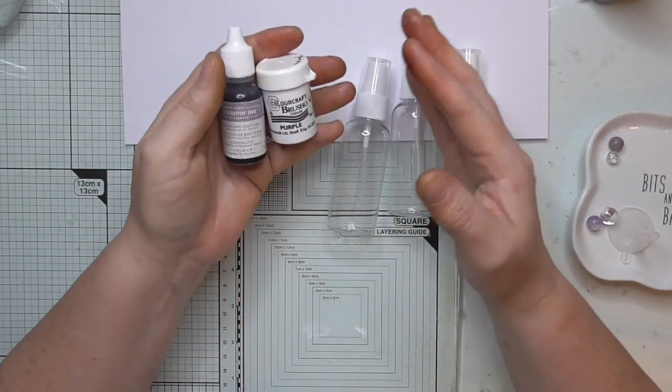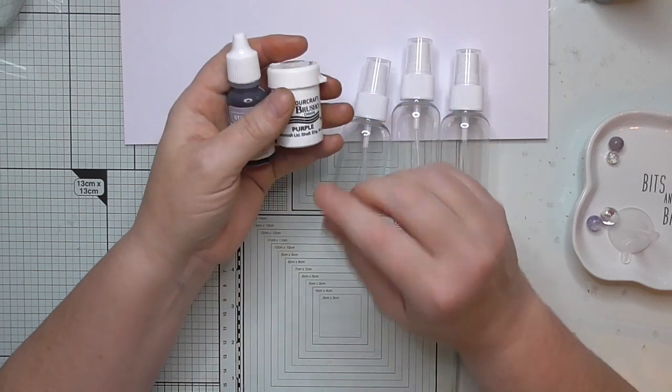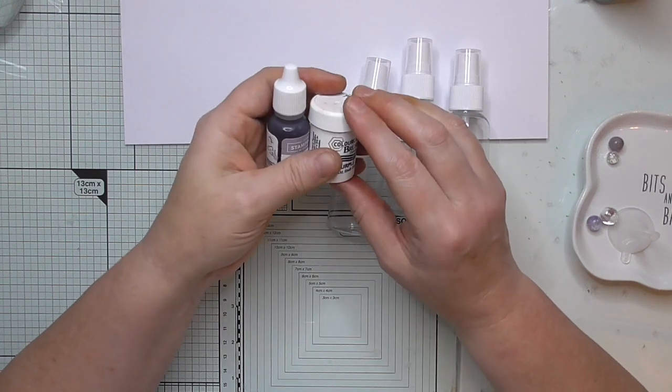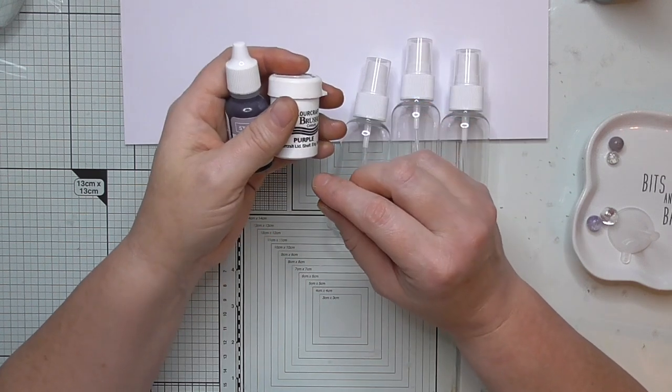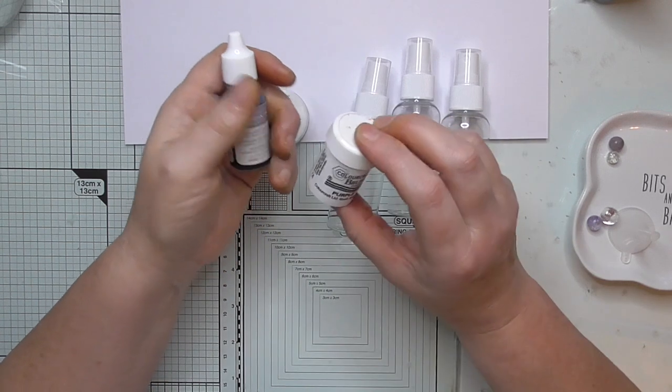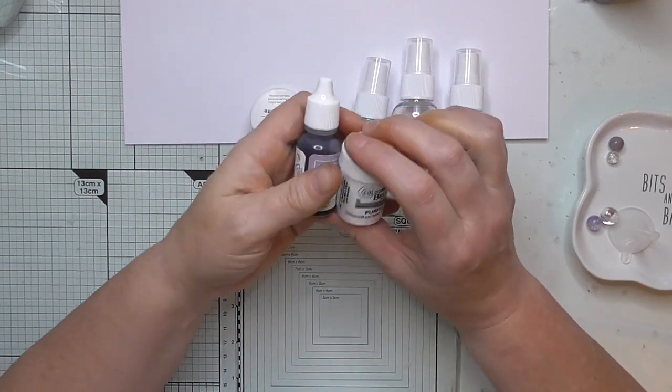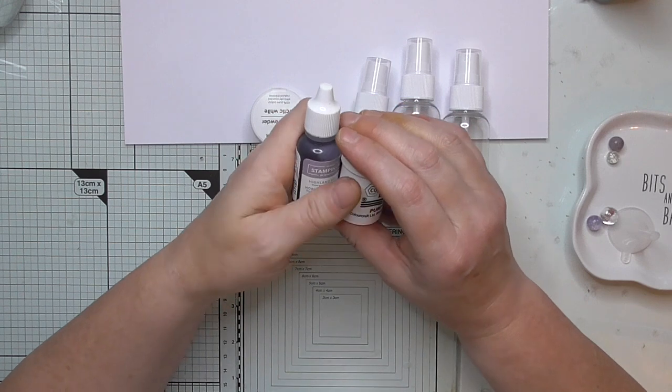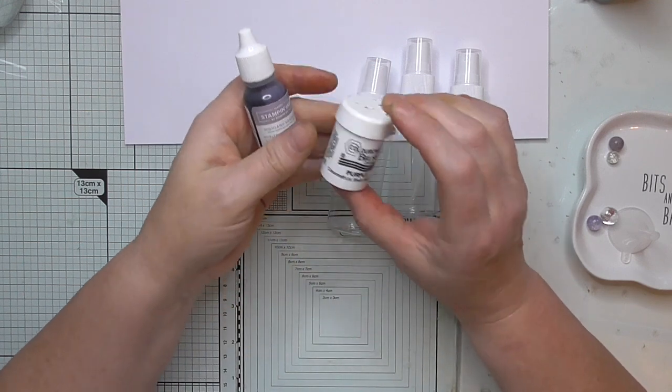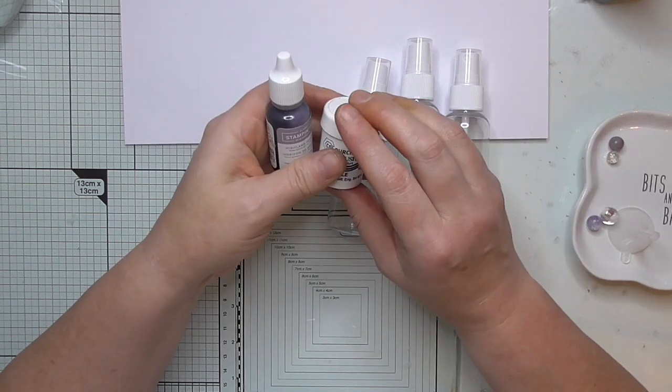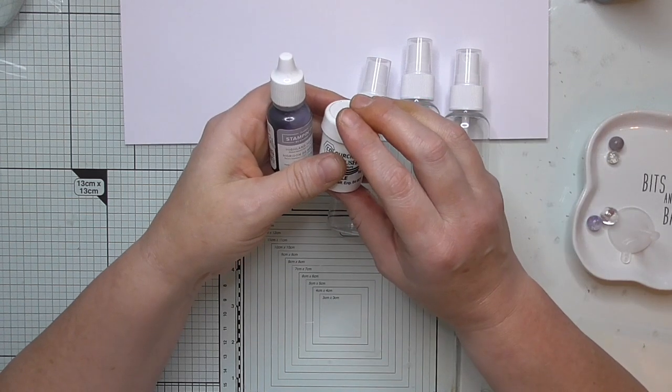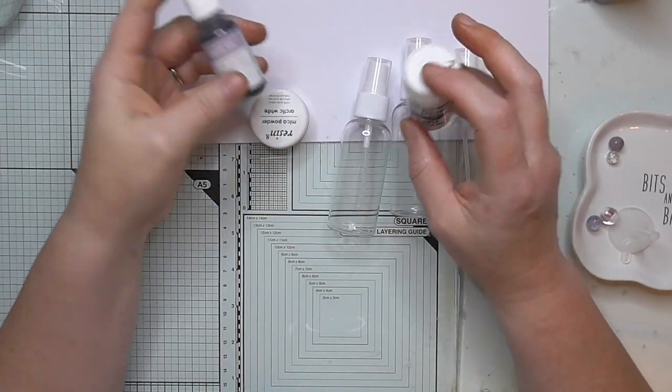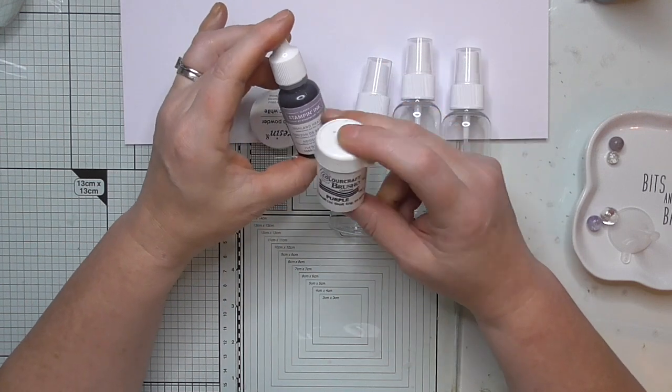Brushos are brilliant because these go a long way. You've got the initial outlay but a lot of people have already got them. You're still going to beat the price of branded ones whatever you use. You can also use just crushed up eyeshadows, so if you've got any old makeup lying about. You can use anything that's water based, like watercolor painting tubes. You can use acrylic paint but from the videos I've watched they will block up your nozzles easier.